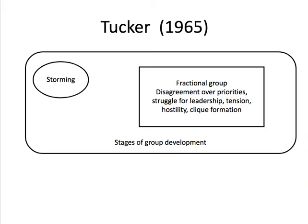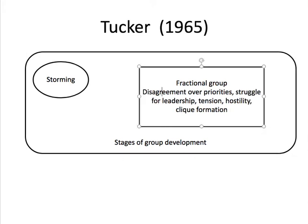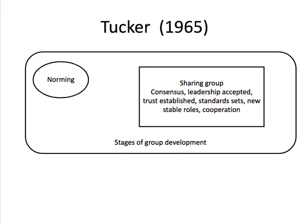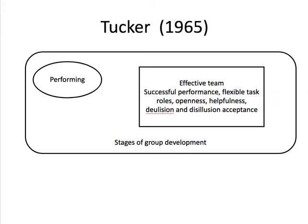After forming, the group will start to storm — different people struggle for leadership, there are tensions and disagreements over priorities, and informal sub-groups may develop. Out of this process, Tuckman says, norms develop: sharing, consensus, accepted leadership, trust, cooperation all start to take place. After this a group can start to perform — working effectively, specialising, dividing roles, and working as a cohesive group.